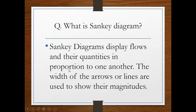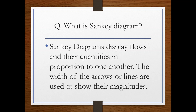We show the input and the output in the form of a diagram, using arrows or lines. The width of the arrow decides the quantity of output. If the width is more, it means more conversion has taken place. If the width is less, it means less conversion has occurred as output. That's the Sankey Diagram.